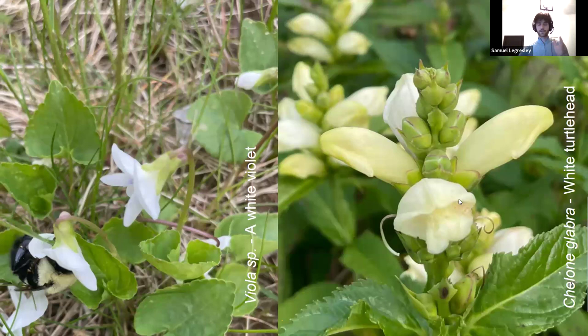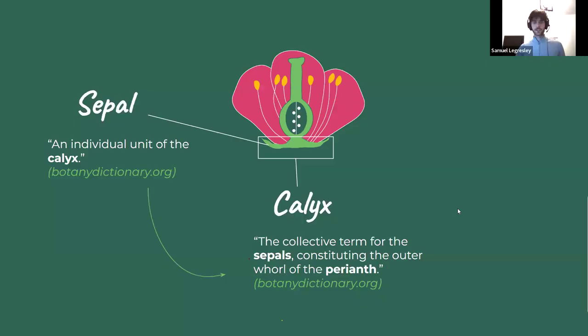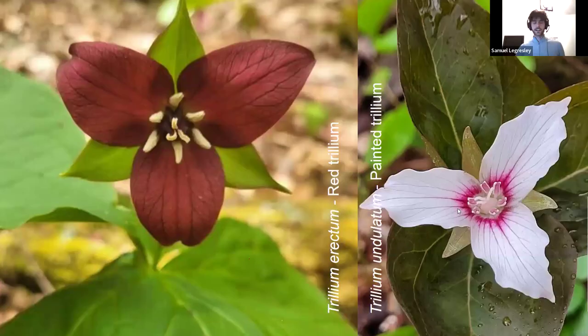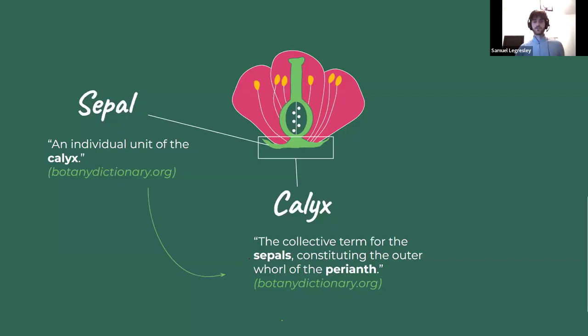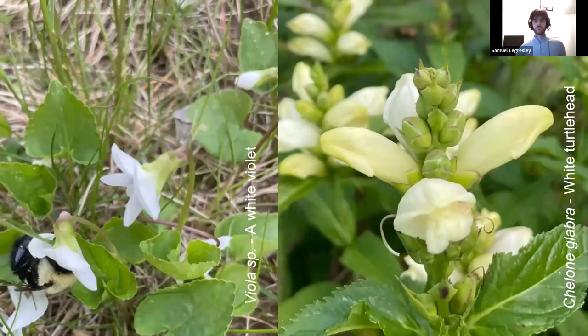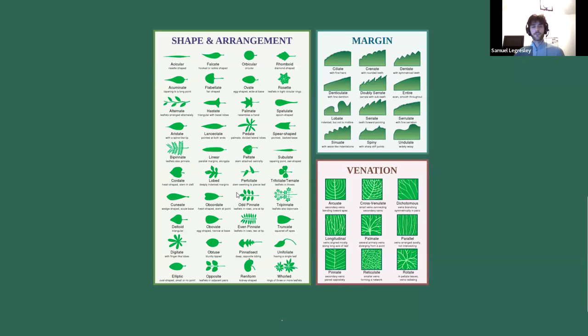Some flowers, like the trillium, are trilaterally symmetrical. And there are all these terms for leaves and venation and different leaf margins. You can get a bunch of definitions, but that's why you need to go further yourself if you want to learn more. Today we're just going to focus on the basics.